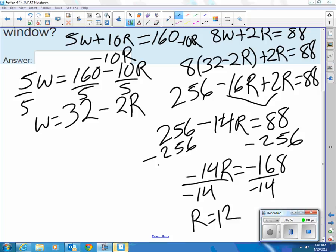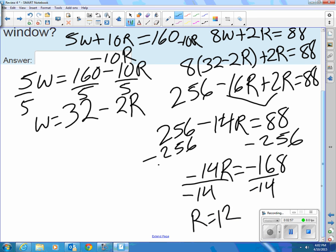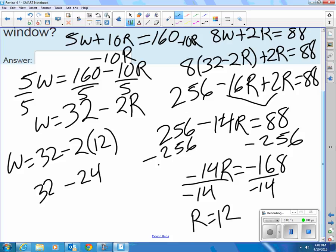And the question was, how much do I get paid for a window? And a window is worth $32 minus 2 of whatever I get paid for a room. And I just figured out that was worth $12. Two twelves is 24. Subtract that from 32, and you get $8 for a window.